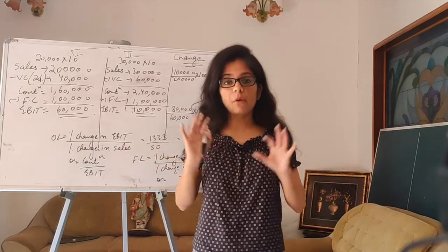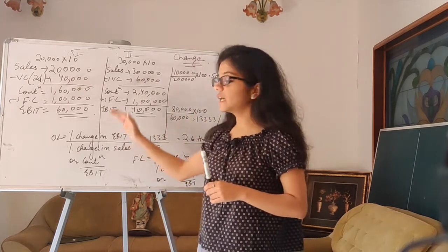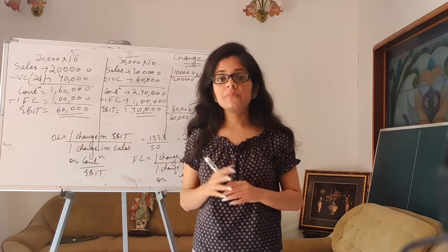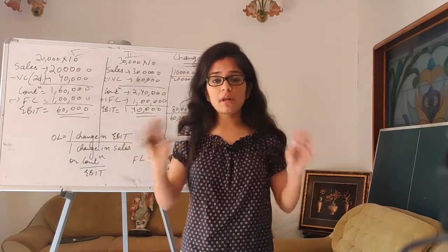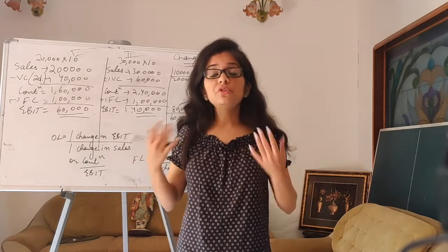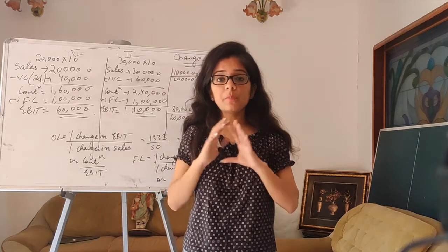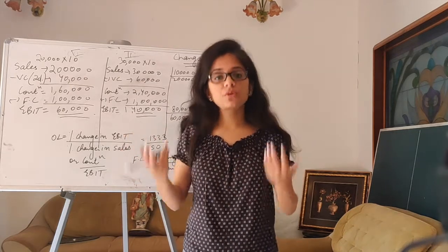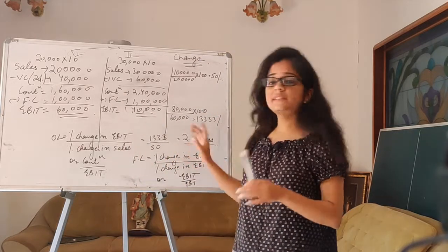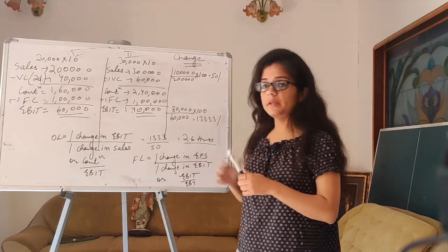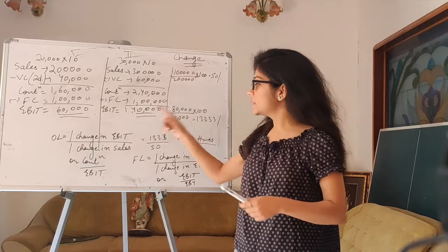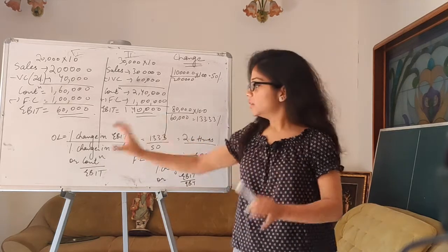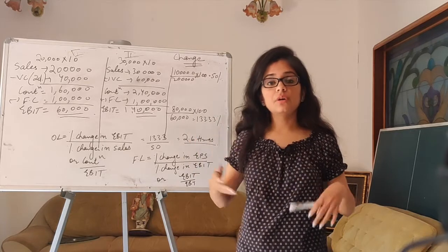The formula for operating leverage is: percentage change in EBIT divided by percentage change in sales. So 133.3 divided by 50 comes out to 2.6 times. There is also a bookish formula: contribution divided by EBIT. Operating leverage of 2.6 times means that if my sales increase by 1%, then my EBIT will increase by 2.6 times that percentage.